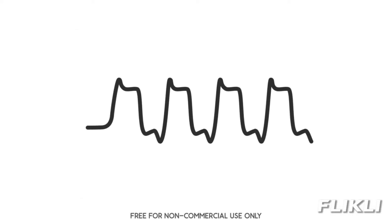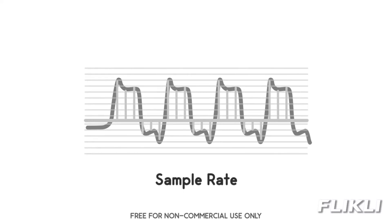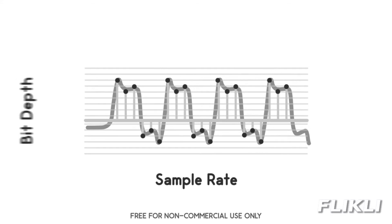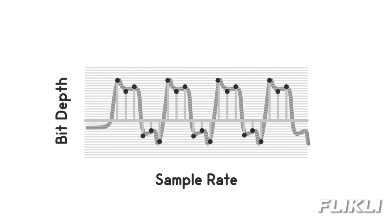This unbroken waveform is analog audio. PCM cuts this wave into lots of small intervals. The number of intervals in a second is called the sample rate, which means that a sample will be taken X times every second. The maximum possible amount of audio data in each sample is determined by the bit depth. Higher bit depths allow a greater amount of data in each sample.